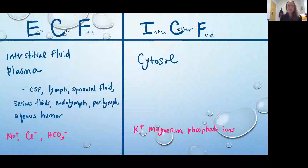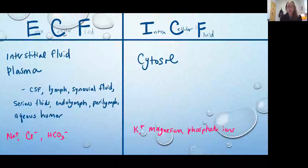These fluids have different compositions. We're going to see the ECF has ions such as sodium, chloride, and bicarbonate ion — that's the HCO3- — whereas the ICF is going to have potassium, magnesium, and phosphate ions. So we do see that these fluids are kept separate by the cell membrane, and the compositions of the fluids are different, but we do have free movement of water across the membrane.